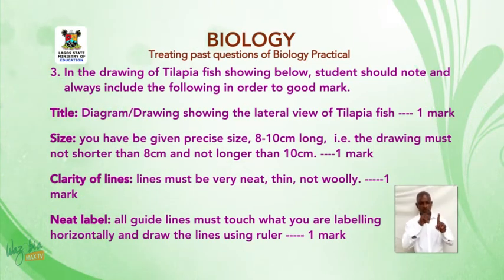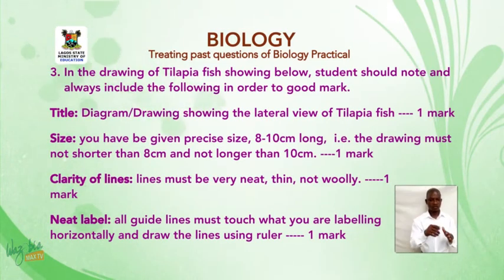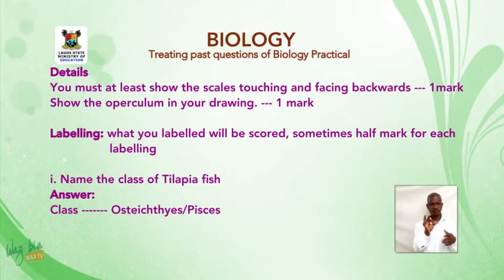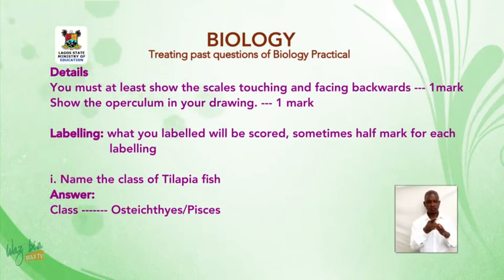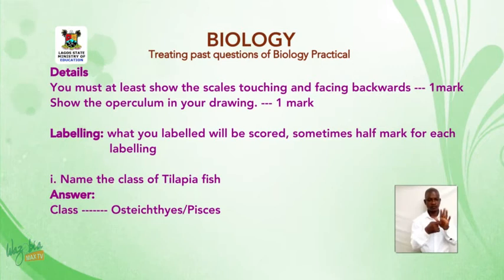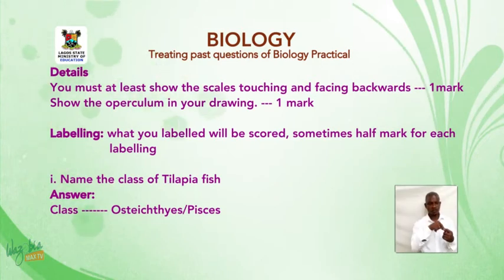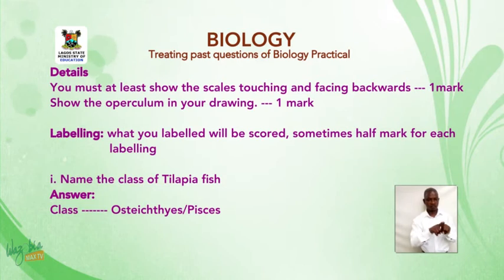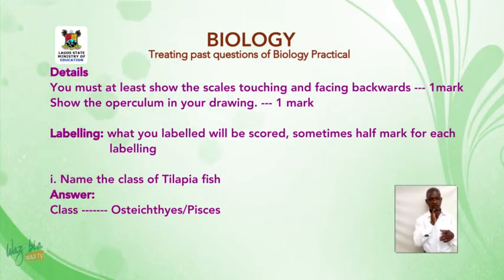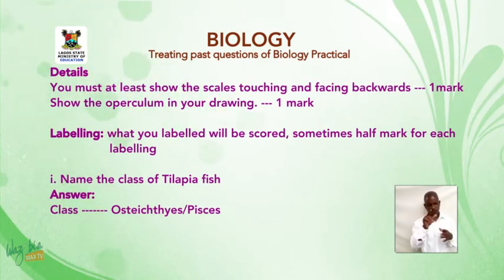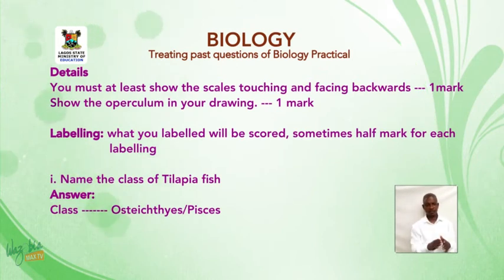Under details, you must at least show the scales touching and facing backwards — that gives one mark. Show the operculum in your drawing — that also gives one mark. The features you label will also be scored; sometimes it is half a mark for each label, depending on the examiners.